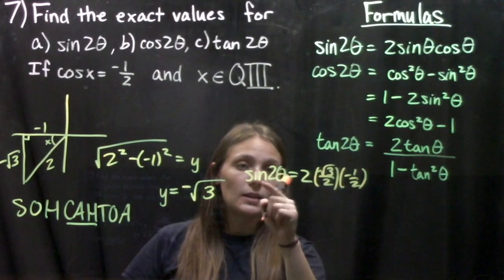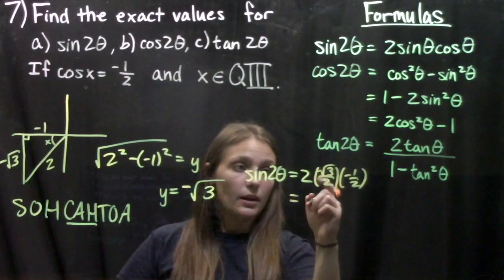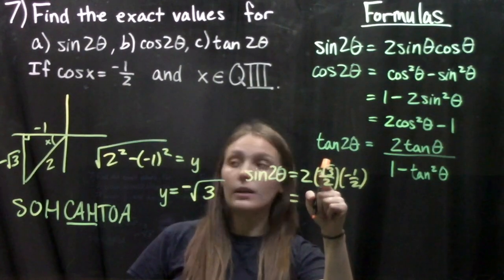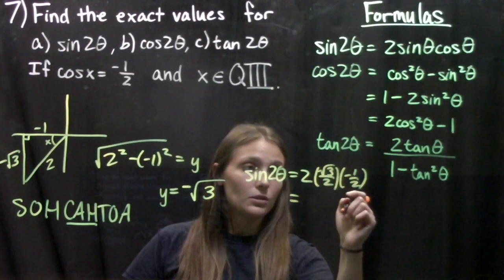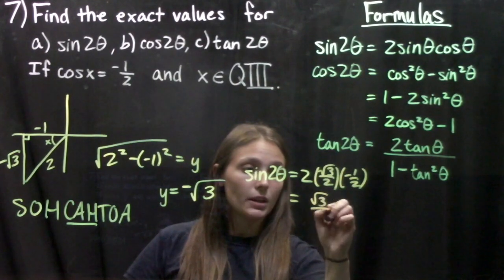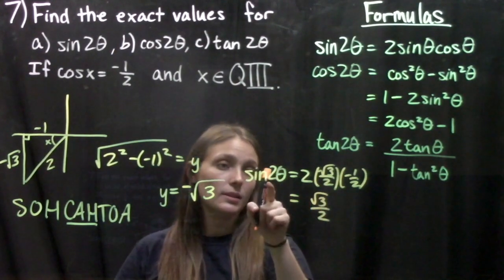So we find that the sine of the double angle equals, we've got our negative root 3 times a negative so that becomes positive, and one of our 2's cancels out, so we get root 3 over 2 is the sine of that double angle.